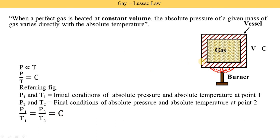At the initial state, we measure the pressure and temperature and find their ratio. After supplying heat energy, we again find the ratio of pressure upon temperature, and we get the same answer. For example, at the initial stage, pressure divided by temperature gives 10. After the final state, pressure and temperature both increase, but their ratio P2 upon T2 is also 10.